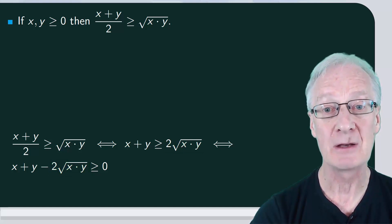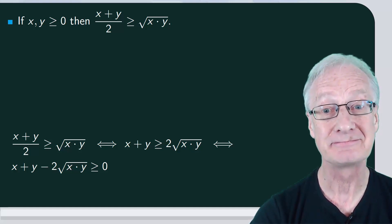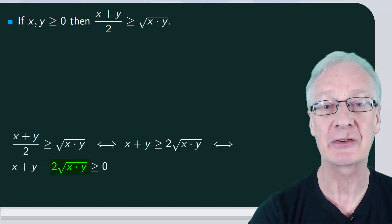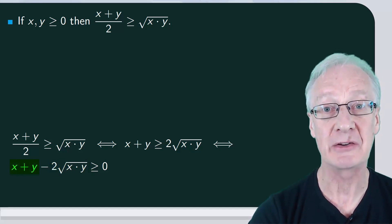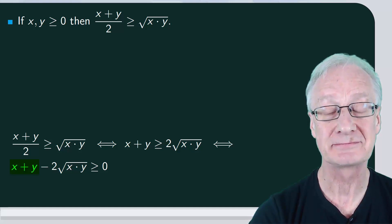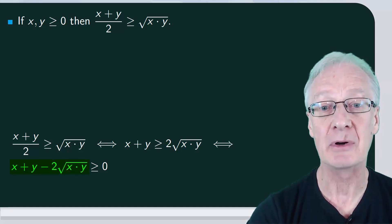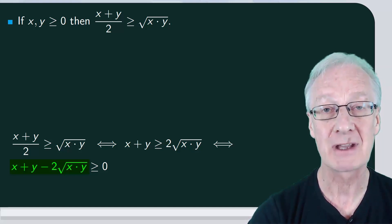What next? We spend some time looking and thinking. We have 2 times the square root of x times y, that is twice something, and in front we have 2 addends. We could think of the square of a sum or a subtraction or complete the squares. Let's try it.